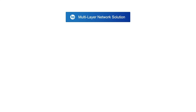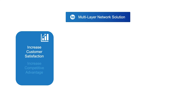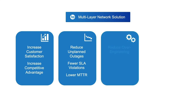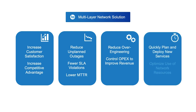Blue Planet's multi-layer network solution provides value in several areas. Firstly, by accelerating time to market for new services, we see an increase in customer satisfaction and improvements in competitive advantage. By simplifying the trouble-to-resolve business process, we also see reduced unplanned outages, fewer SLA violations, and lower mean time to repair for service delivery issues. Multi-layer networking provides actionable data for informed decisions to reduce over-engineering and control OPEX, resulting in improvements in revenue. Better network optimisation and monetisation enables CSPs to quickly plan and deploy new services and optimise the use of network resources.